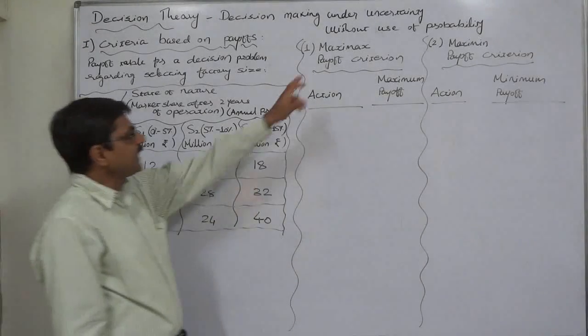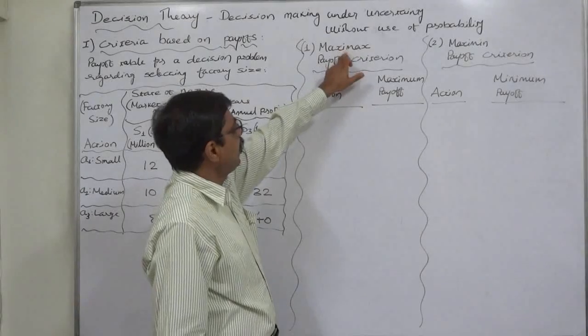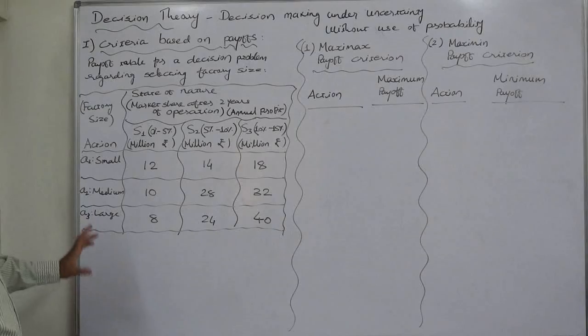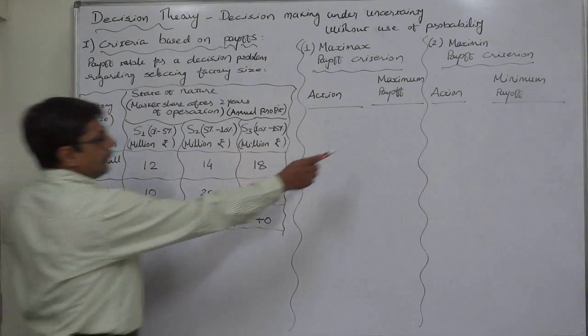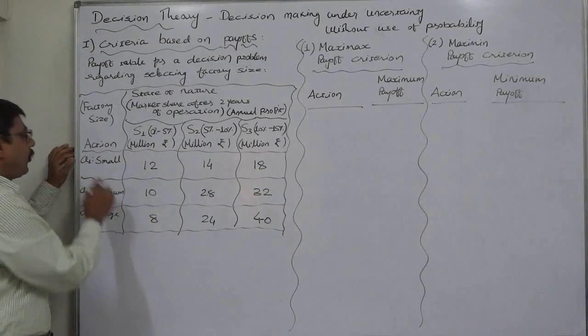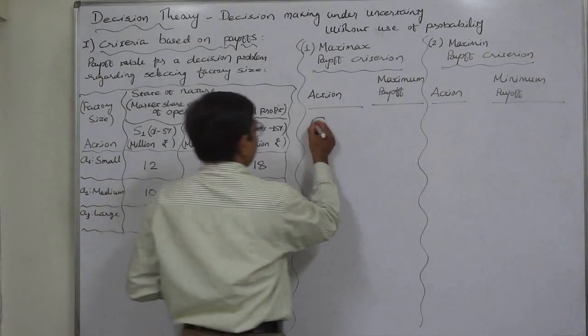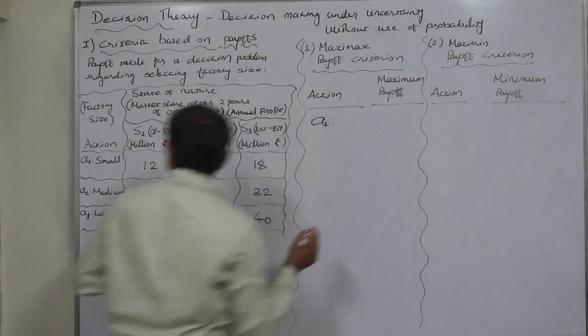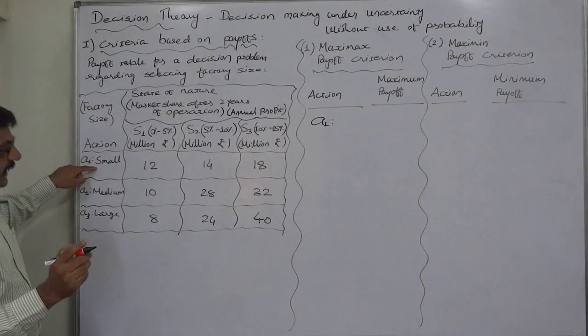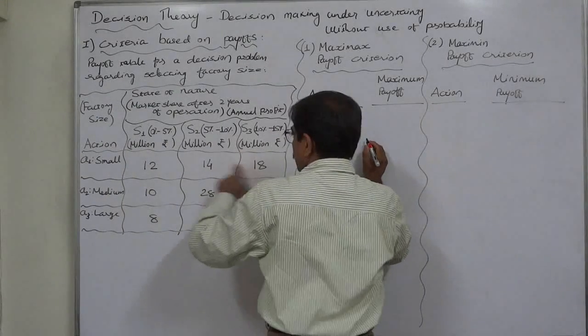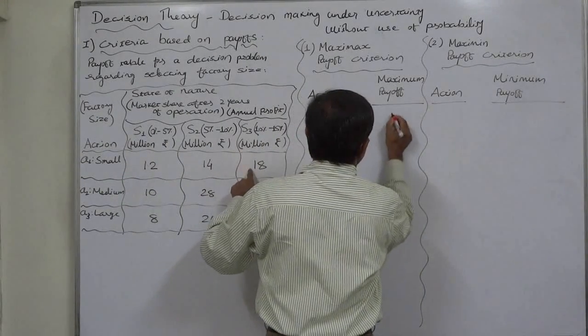Then which action should they select? Maximax - maximum of maximum. For that purpose, we just need to list the maximum payoffs of all the actions. A1, we are just going to write the short forms, small factory size, and the highest possible or maximum possible payoff is 18.